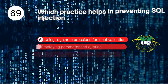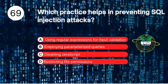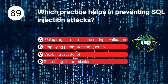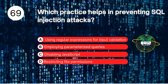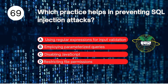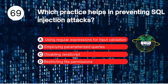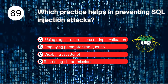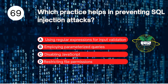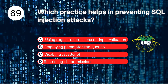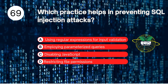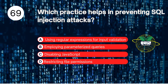Number 69. Which practice helps in preventing SQL injection attacks? A. Using regular expressions for input validation. B. Employing parameterized queries. C. Disabling JavaScript. D. Restricting file permissions. The answer is B. Employing parameterized queries.